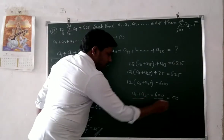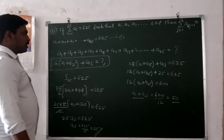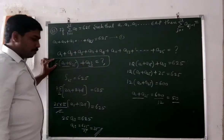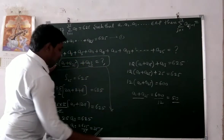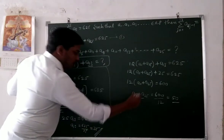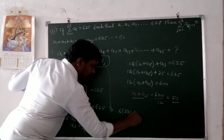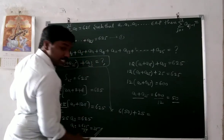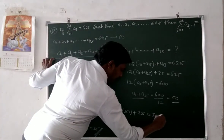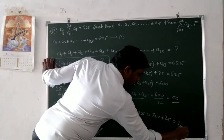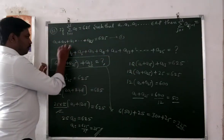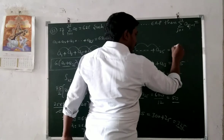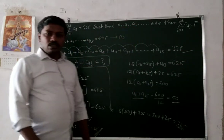So the summation equals 6 times (a1 plus a25) plus A13. That is 6 times 50 plus 25, which equals 300 plus 25, equal to 325. The sum of 13 odd-indexed terms is equal to 325.